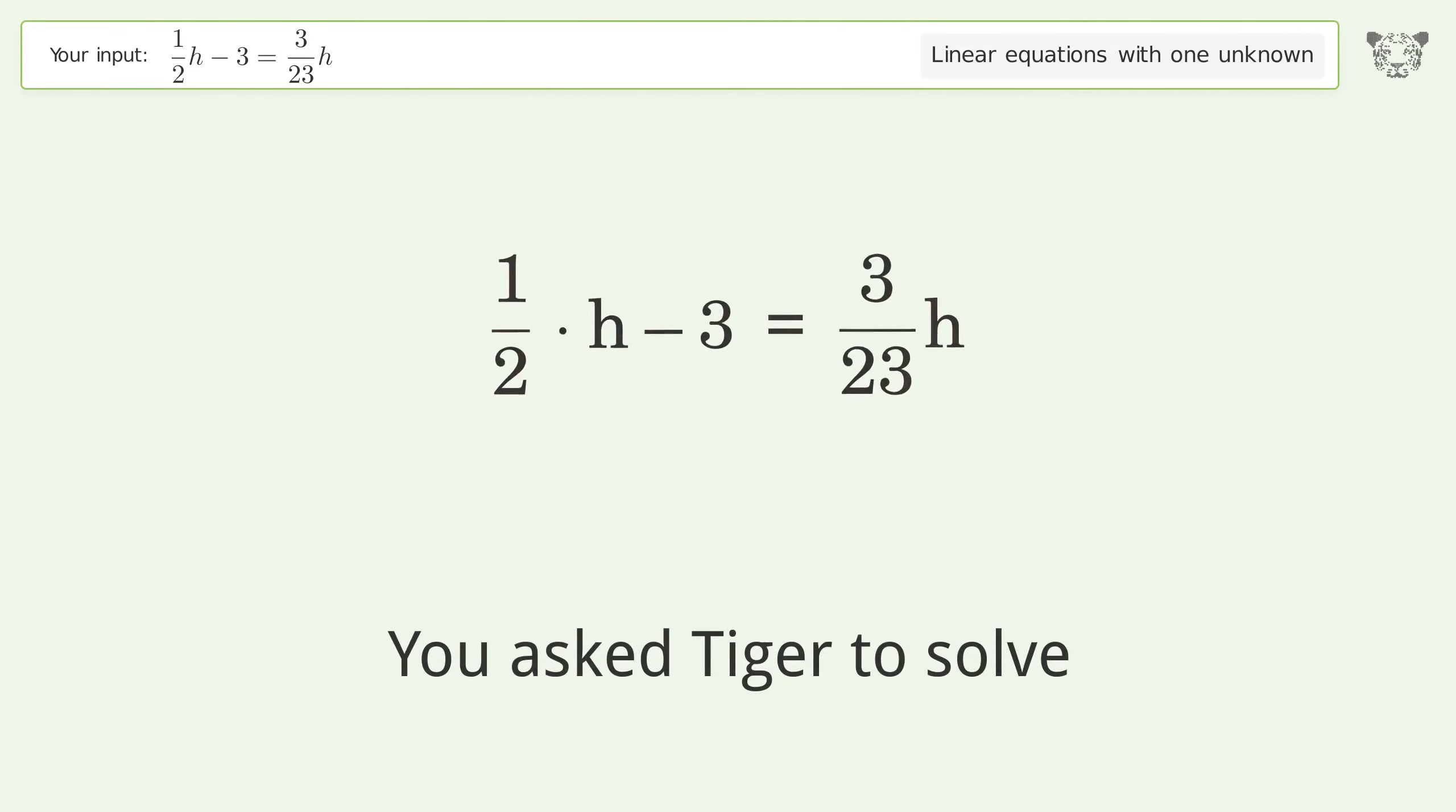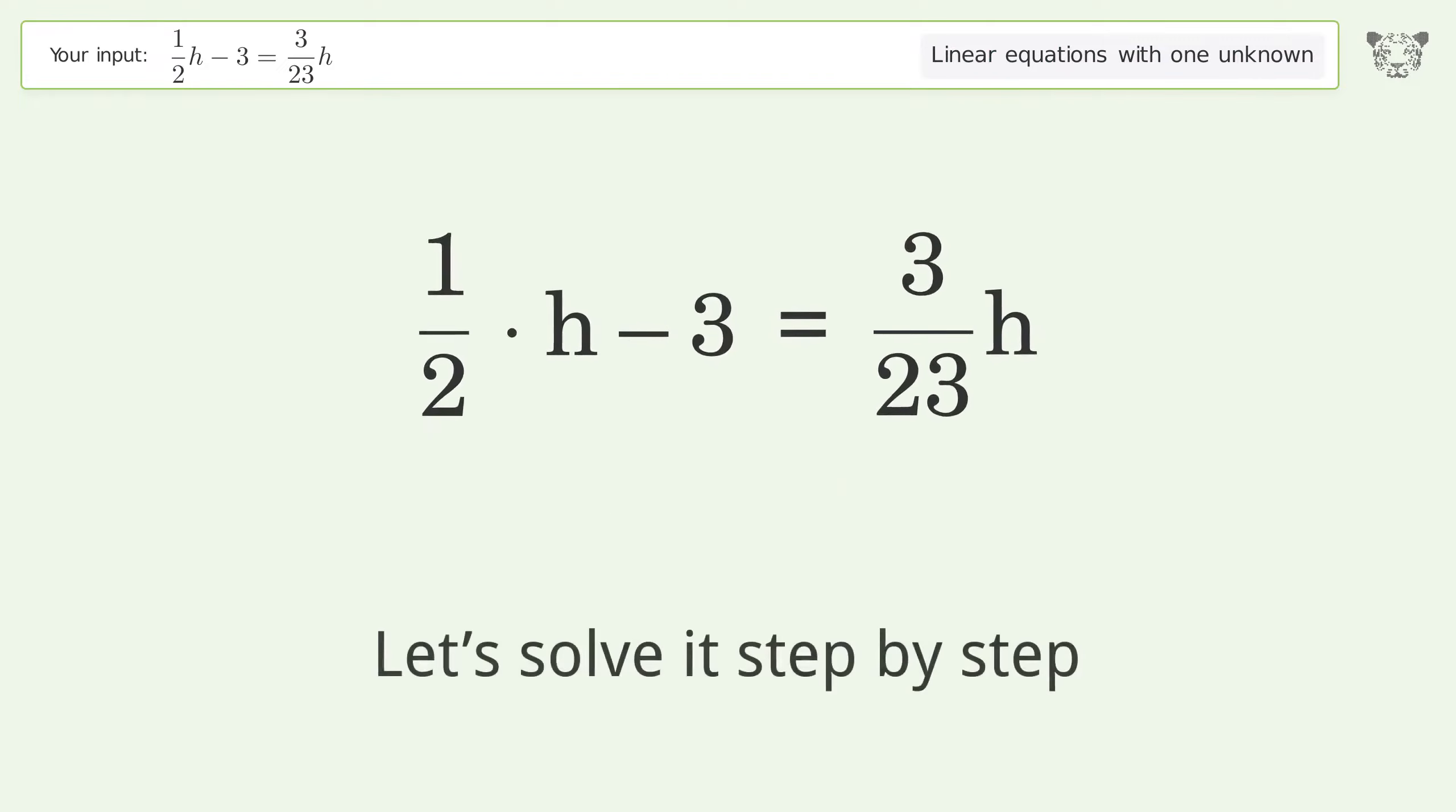You asked Tiger to solve. This deals with linear equations with one unknown. The final result is h equals 138 over 17. Let's solve it step by step.